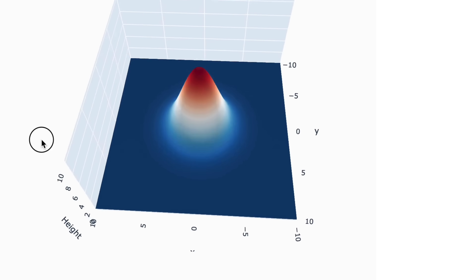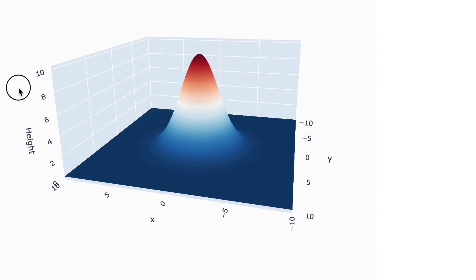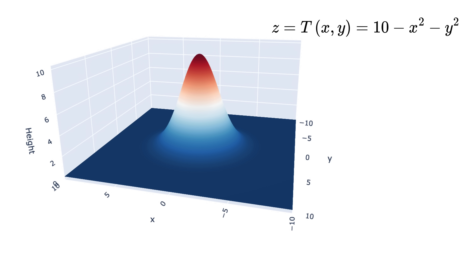We can plot the temperature at any point along the z-axis, and it is calculated as 10 minus the square of x, minus the square of y. This means that as x increases or decreases from zero, or as y increases or decreases from zero, z gets smaller, forming a smooth downward slope.